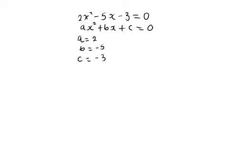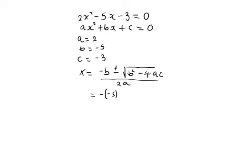To solve using the quadratic formula, we substitute the values of a, b, and c. So x equals negative b plus or minus the square root of b squared minus 4ac, divided by 2a. This becomes negative of negative 5, plus the square root of negative 5 squared, which is 25, minus 4 times 2 times negative 3. Negative times negative gives a positive number.